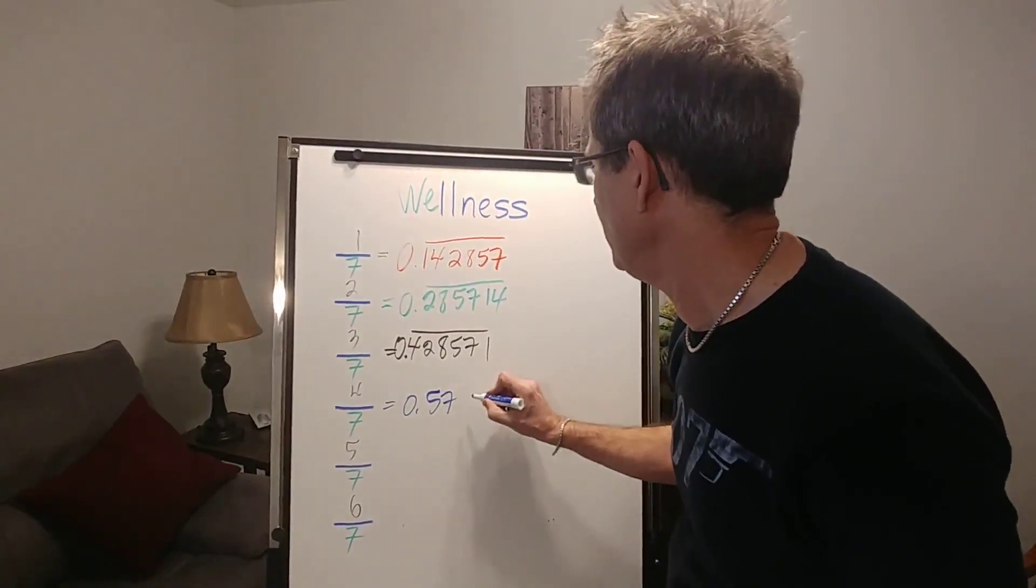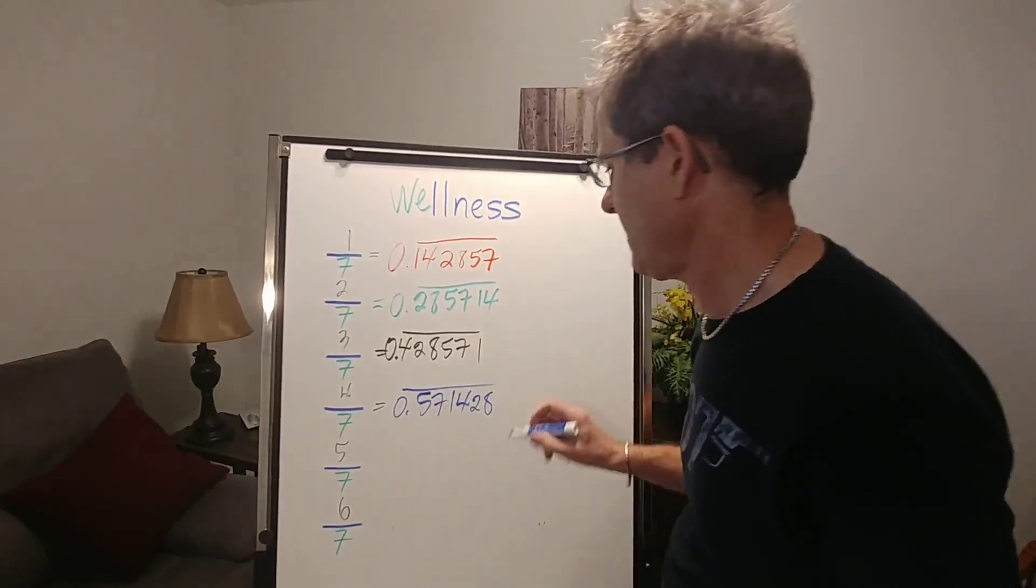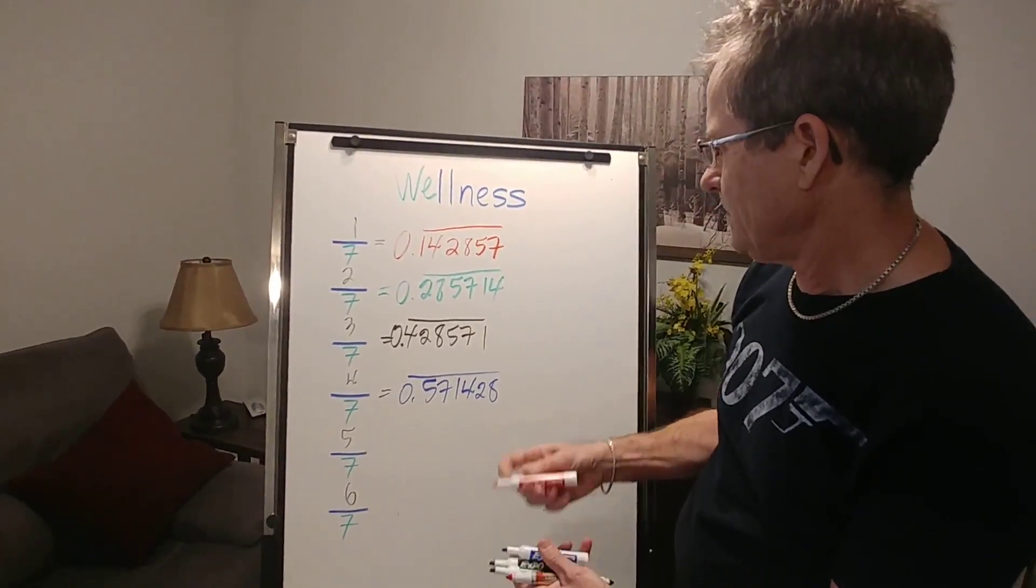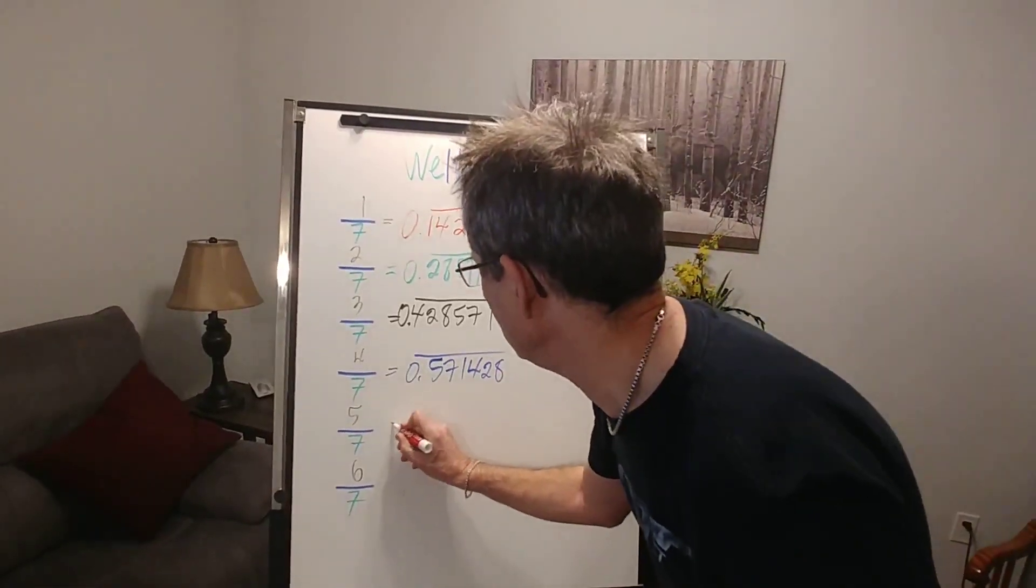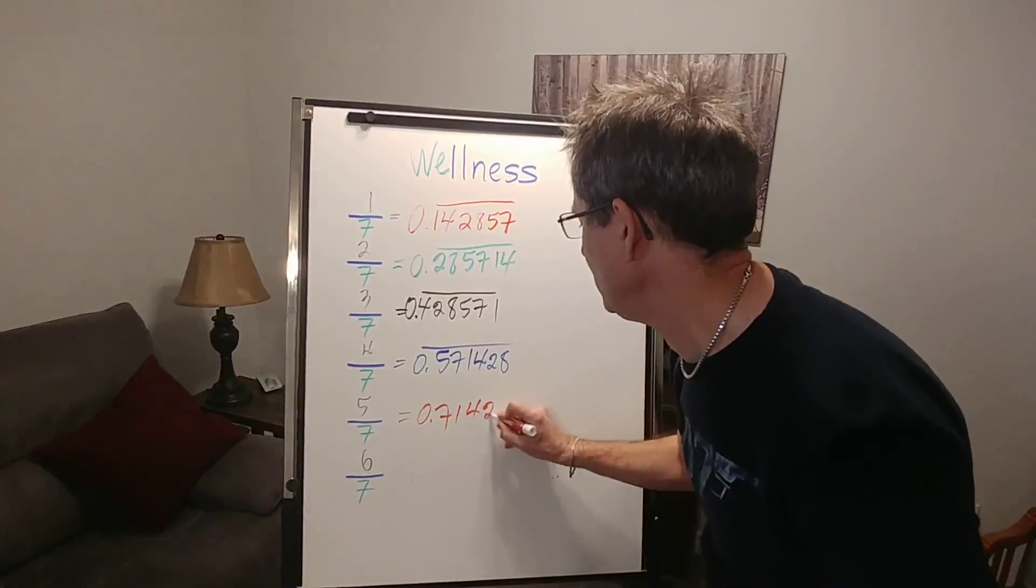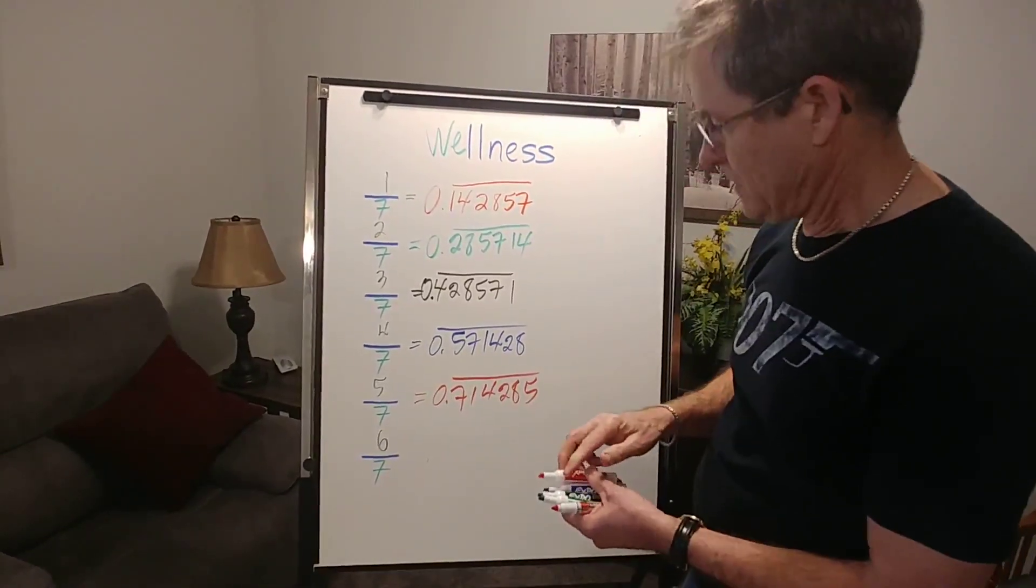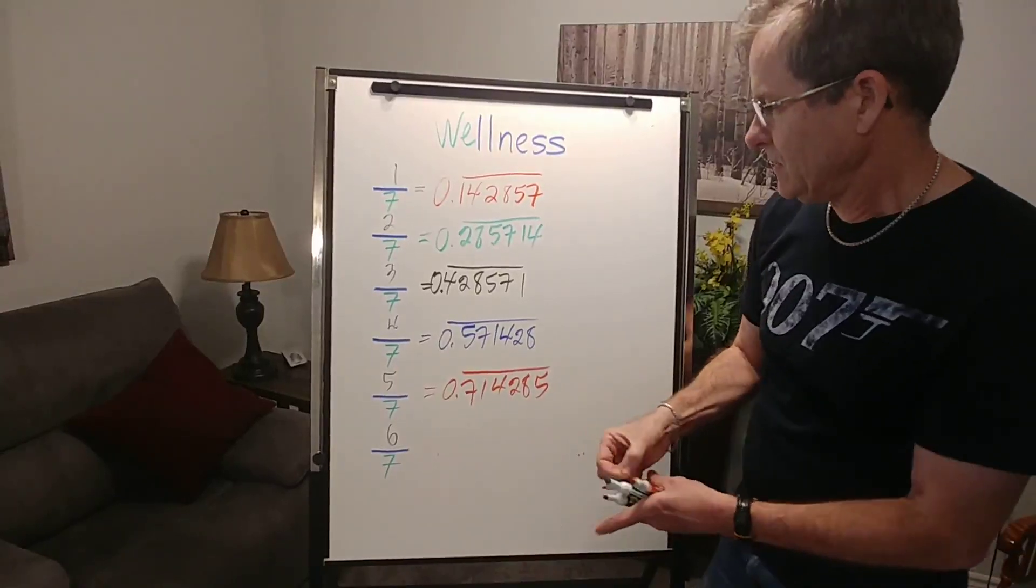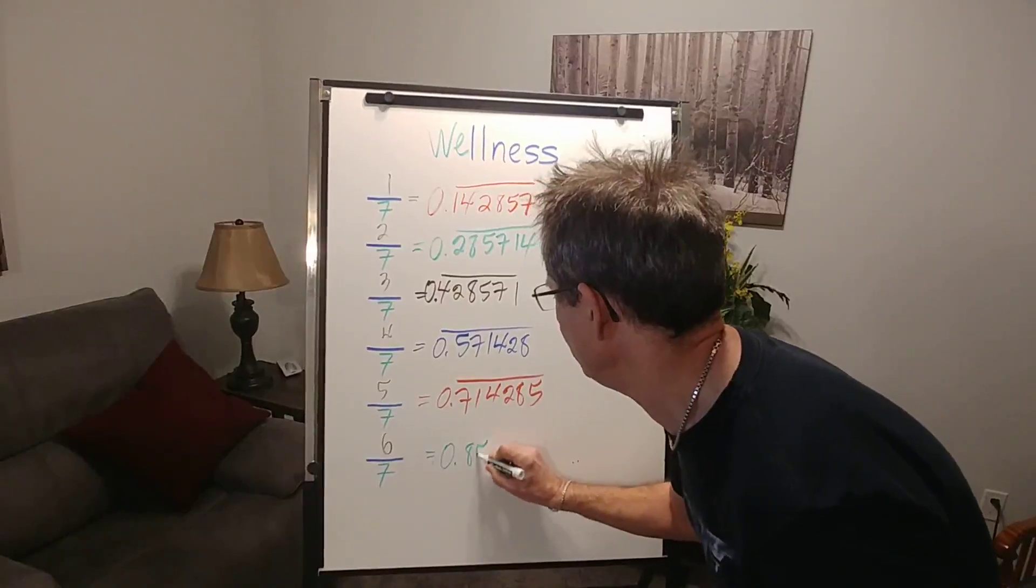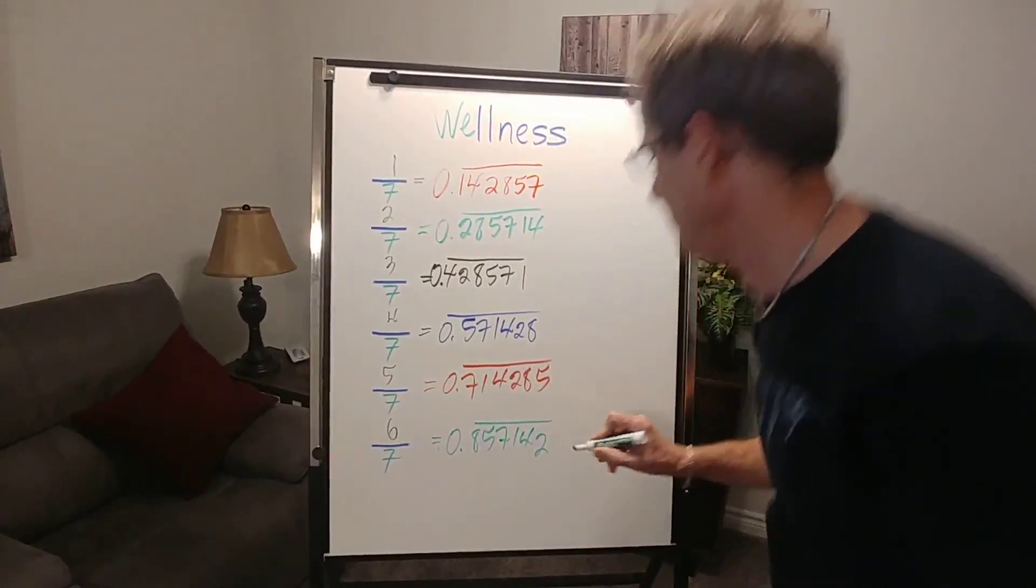5 divided by 7 is 0.714285, and 6 divided by 7 gives you 0.857142, repeating.